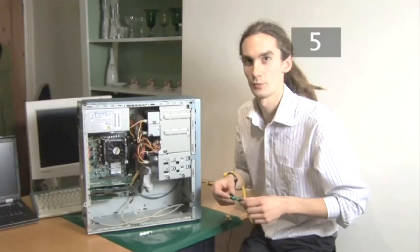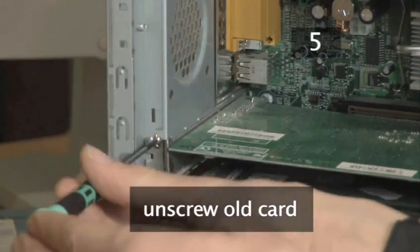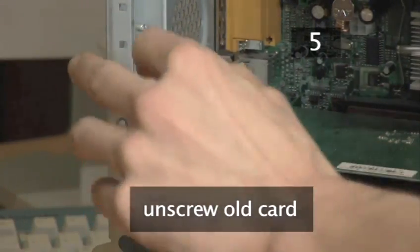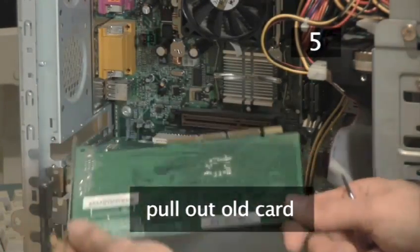To remove the graphics card you need to remove the screw holding it in place. Then pull the graphics card out of the AGP slot. That is literally all you have to do to remove the old graphics card.